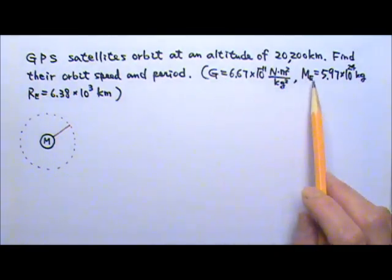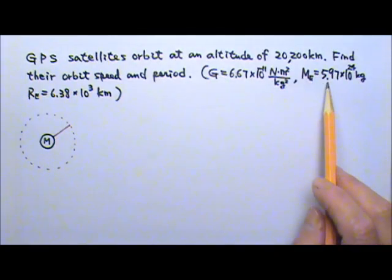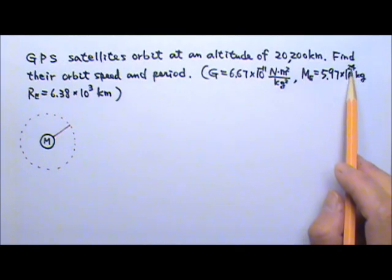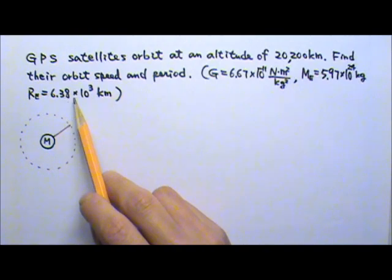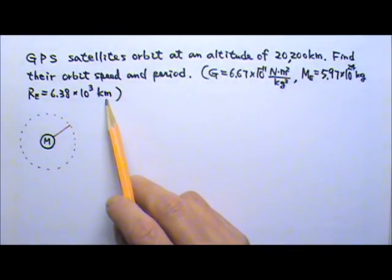And you're given the value of big G. The mass of the Earth is 5.97 times 10 to the 24th kilograms. The radius of the Earth is 6.38 times 10 to the 3rd kilometers.